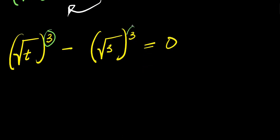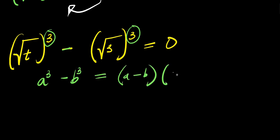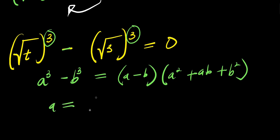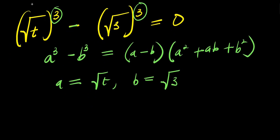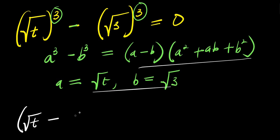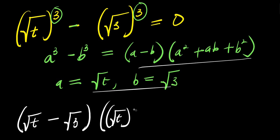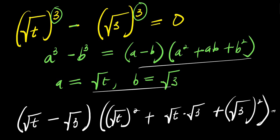Now at this point, I have power 3 here and power 3 here with a minus. If I have a³ minus b³, this equals (a − b)(a² + ab + b²). In this case, a equals square root of t and b equals square root of 3. So applying this, I have (√t − √3)(√t² + √t·√3 + √3²) equals 0.